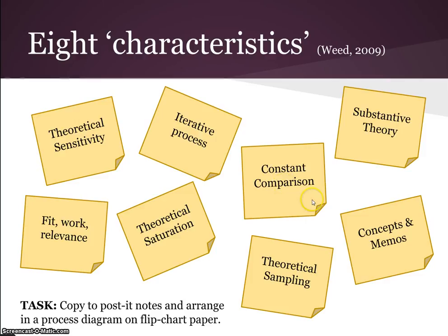Within this iterative process, we have something called a constant comparison process, where you're constantly comparing either one data source to another and trying to understand the differences and similarities, or comparing data to existing concepts that you've generated. Constant comparison describes this idea of constantly comparing data to data, or data to concepts, and it's through that process that we develop some initial thoughts.